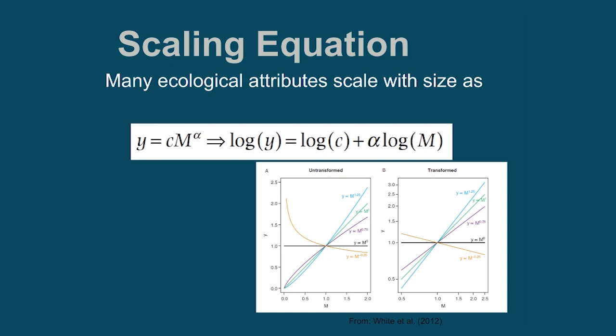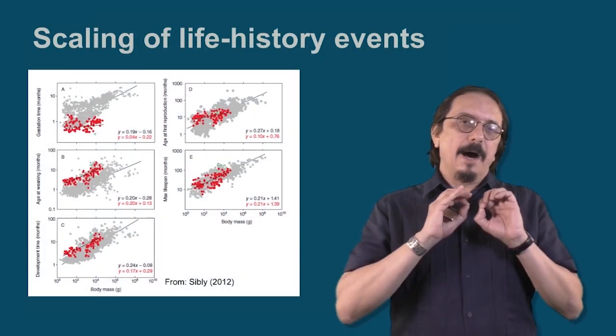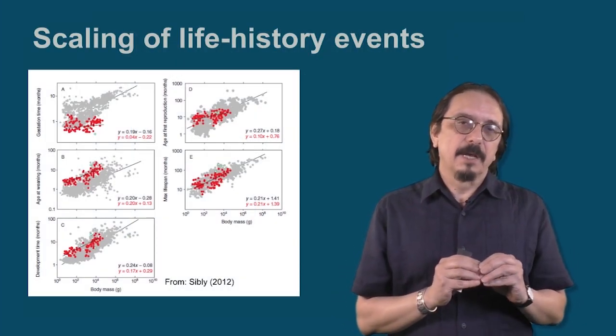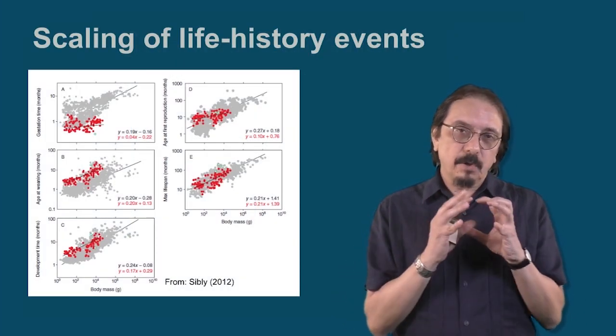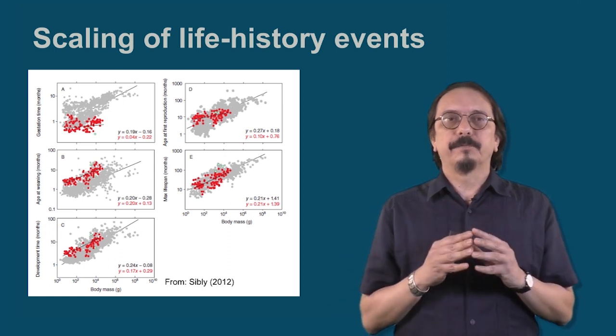Panel A shows scaling relationships in the non-linearized form, and panel B shows the linear relationship that results after taking the logarithms — which makes it easier to analyze. Examples of scaling abound in nature and affect the way organisms are put together and evolve through natural selection.